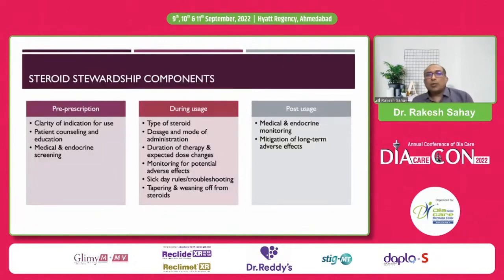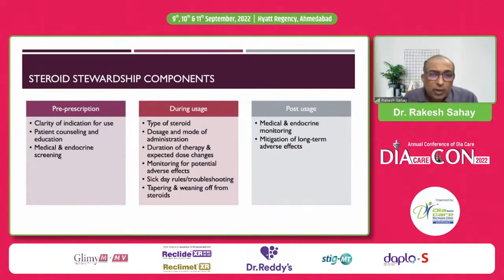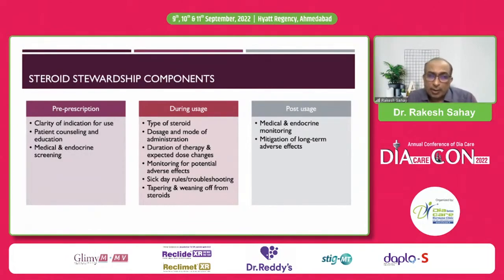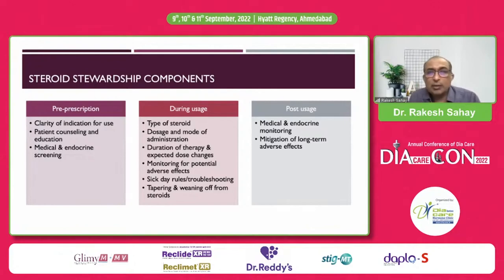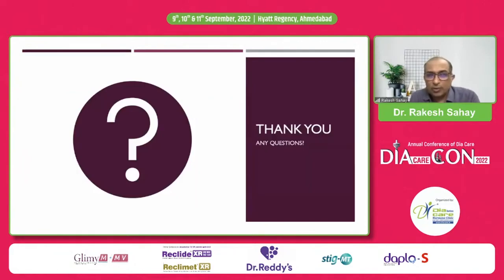To conclude: when using steroids, it is very important to use them for a clear indication, at the appropriate dose, for the appropriate period of time, given the several adverse effects including hyperglycemia. As diabetologists, endocrinologists, and physicians managing hyperglycemia, we should understand the type of steroid being used, match it with appropriate therapy, and effectively maintain our patients' glucose levels in the normal range. Thank you for your patient hearing; I will be happy to answer any questions.